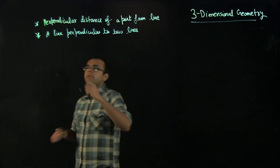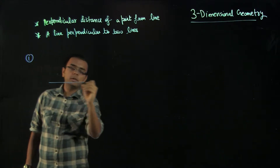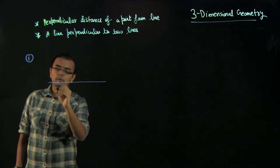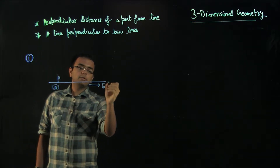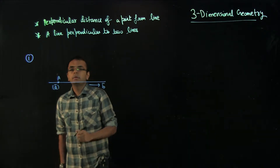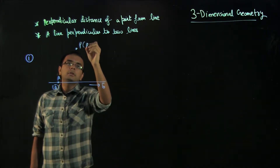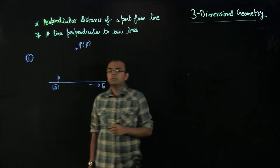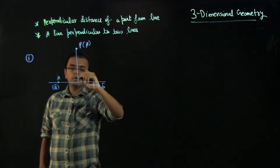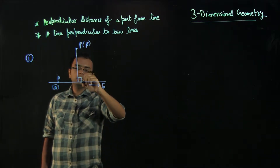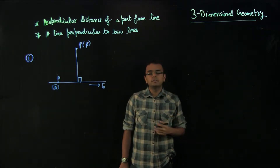Let us start by finding the perpendicular distance of a point from a line. We have been given a line with a point A (vector A), a parallel vector B, and a point P (vector P), and we have been asked to find the perpendicular distance of the point from the line. You may recall this type of problem from 2D straight lines, but this is 3D dimensional geometry.